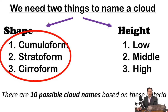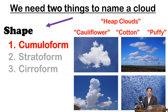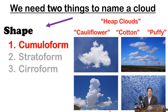Cumuliform clouds are the ones that are puffy. Sometimes we call these heap clouds, like a big pile of a cloud. You can see the edges of cumuliform clouds — they can be long, tall, or nearly circular. What they all have in common is they have this cauliflower look, or like cotton. They're puffy clouds — those are cumuliforms.